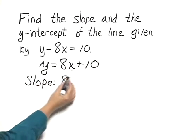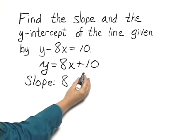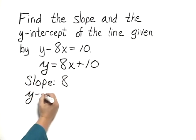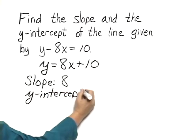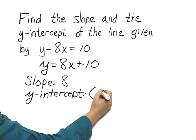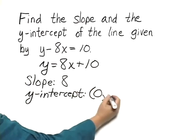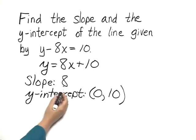The y-intercept we get from reading the number after that, the plus 10. We write it as a point with the x-coordinate of 0 and the y-coordinate of 10. So the slope is 8 and the y-intercept is the point (0, 10).